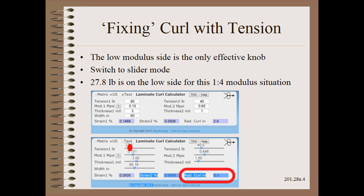or reaches zero in this case. The 27.8 pounds of tension required to just balance strains is on the low side for this PE. Moduli ratios greater than 4 to 1 are nearly impossible to laminate flat.